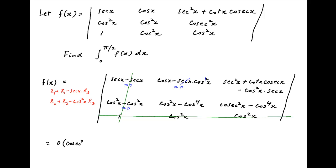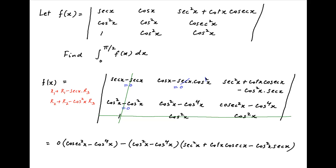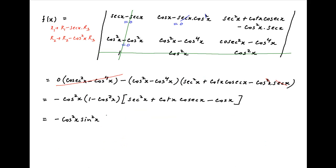Therefore, f(x) is equal to 0 times (cos²(x) minus cos⁴(x)) minus (cos²(x) minus cos⁴(x)) times (sec²(x) plus cot(x)cosec(x) minus cos²(x) times sec(x)). This simplifies to minus cos²(x) times (1 minus cos²(x)) times (sec²(x) plus cot(x)cosec(x) minus cos(x)). Since 1 minus cos²(x) equals sin²(x),